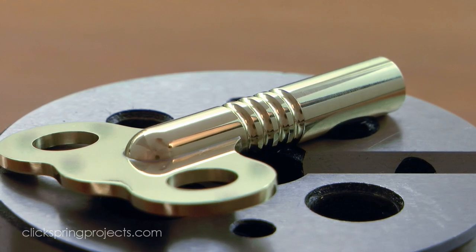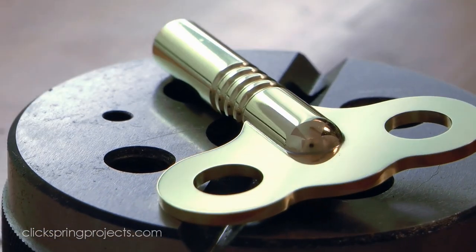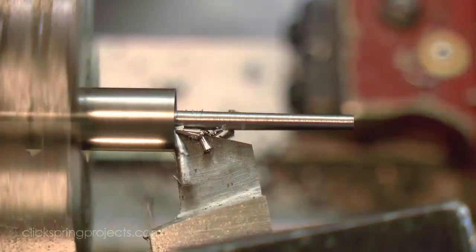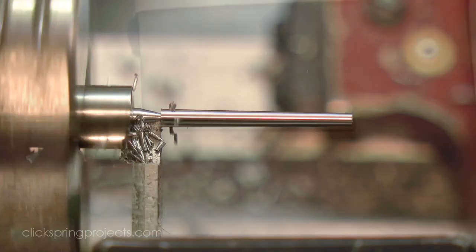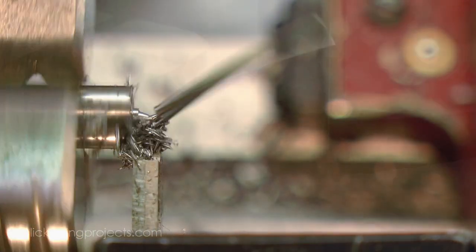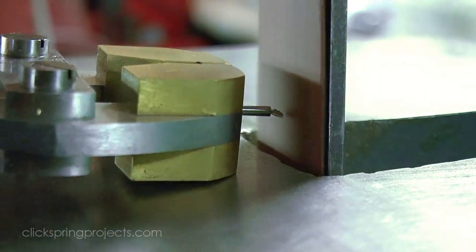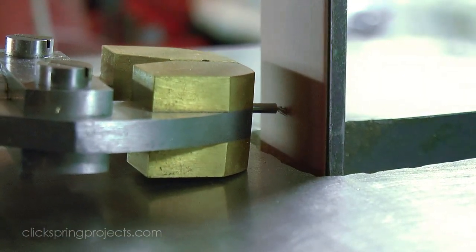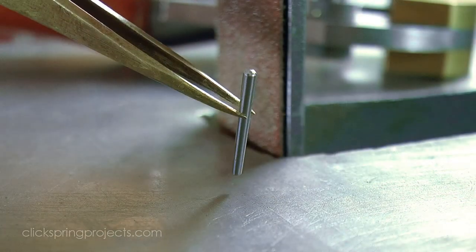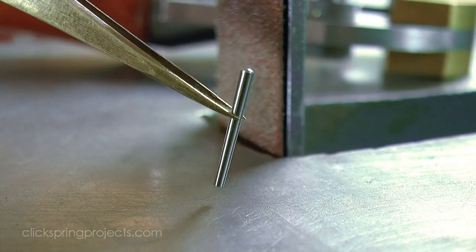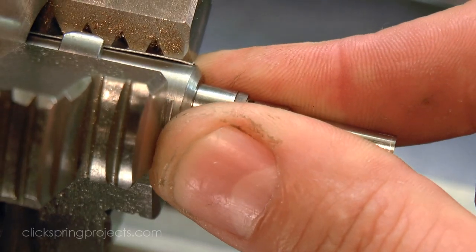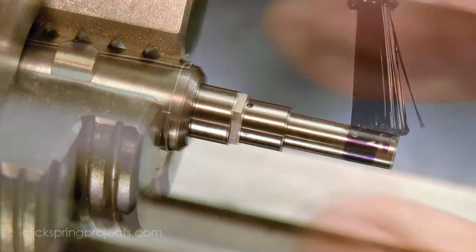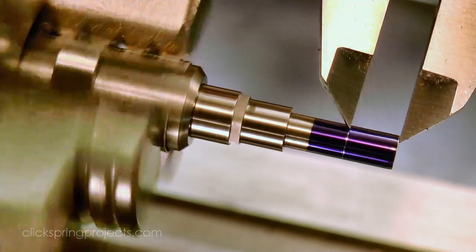Now before I move on to the final polish and assembly, there's a few loose ends that need to be tidied up. The commercial clock pins that I used during the construction process can now be replaced with custom made taper pins with a better surface finish. And I don't need to put the barrel arbor between centers again, so that can be trimmed to final length and then given a domed end.